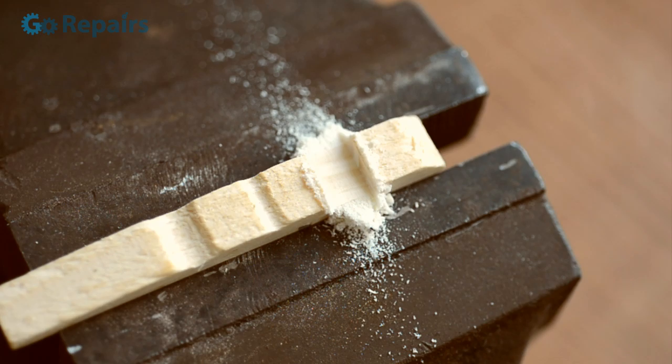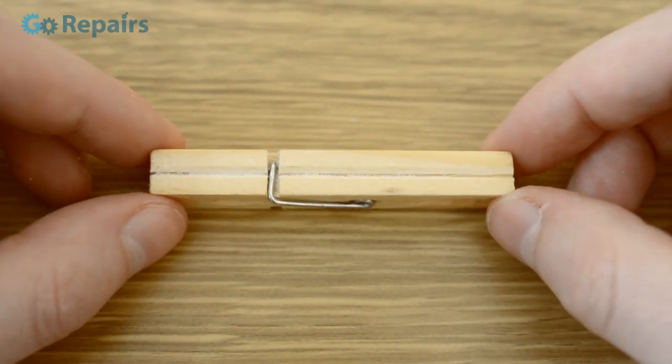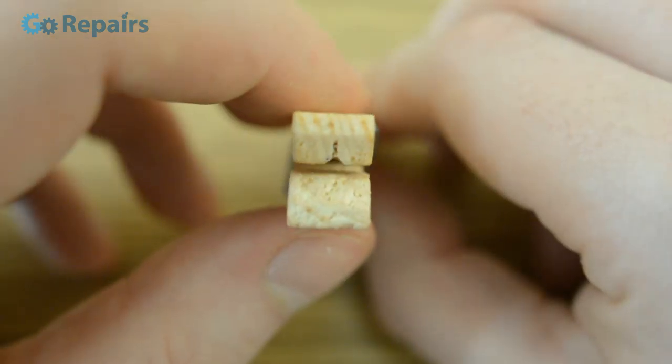When that's complete, it's time to reassemble our pegs. Pair each peg you've worked on with a peg that's unchanged, as one is used to guide the ammo while the other is there to hold it in place.